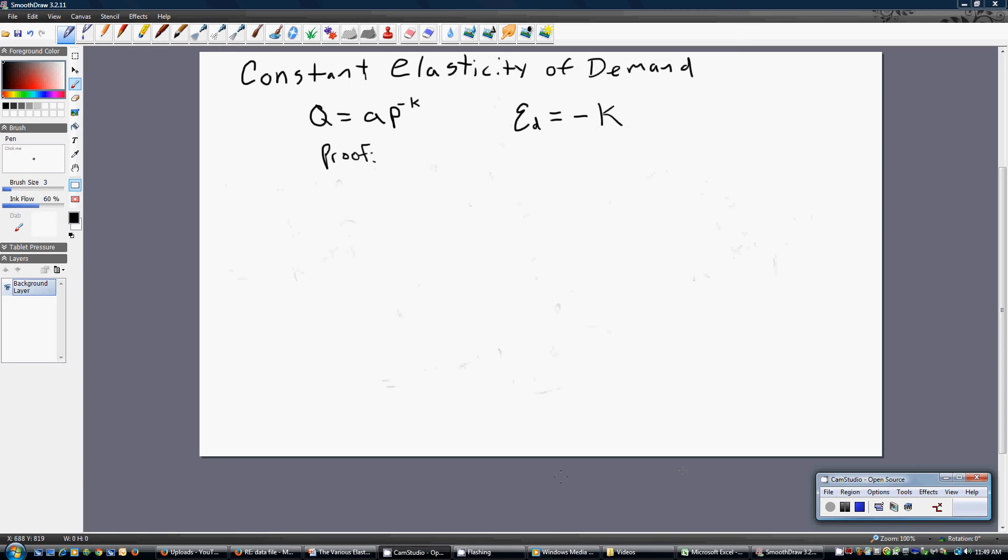To get a constant elasticity of demand function, we're going to specify that quantity demanded equals some constant A times P raised to the minus K power. The elasticity of demand, the price elasticity of demand, will just equal this minus K. So if P was raised to minus 2, the price elasticity of demand would always equal minus 2, no matter where we are in the demand curve.